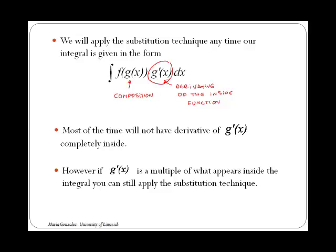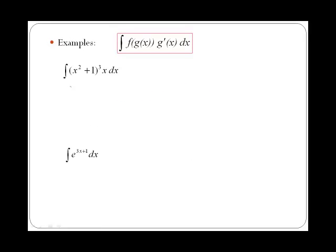Having a look at the following examples will help you to understand this. In the first case we have the integral of x squared plus 1 to the 3, times x dx. If you realize, x squared plus 1 to the 3 is the composition between two functions: a function g of x which is x squared plus 1, and a function f of x which is x to the 3. So x squared plus 1 to the 3 is simply putting g inside f — therefore you have the composition between two functions.